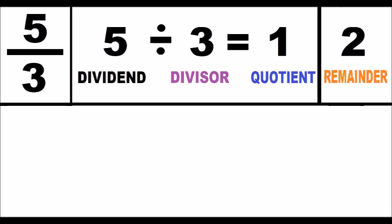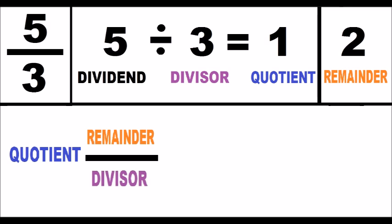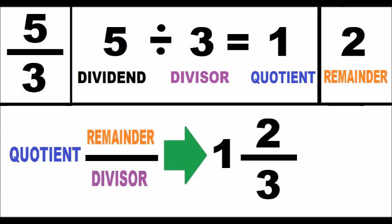Third step, I look at the following diagram and I replicate it, replacing each element with the elements of the previously calculated division. Finally, I get the mixed number that is equivalent to the initial improper fraction. Thanks for watching!